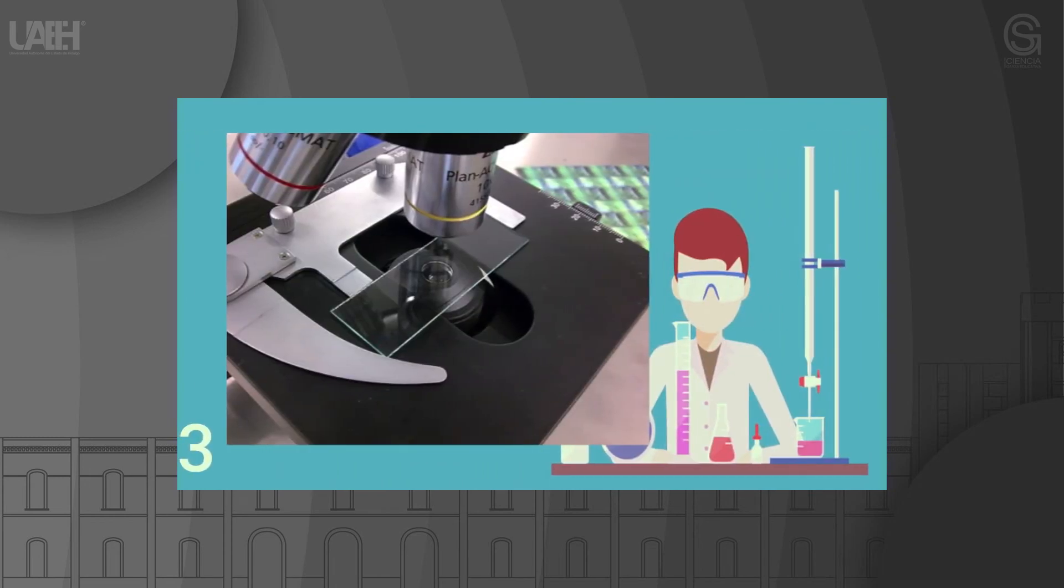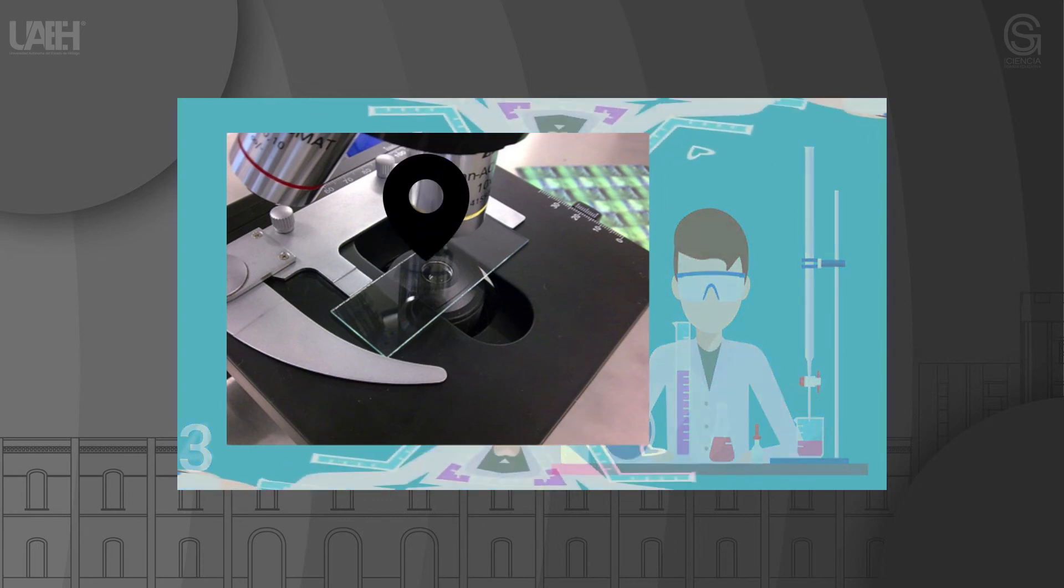Tip 3: Make sure to always cover your samples with a cover slip. This is necessary for good preparation and can also prevent the objective and samples from coming in contact if you mistakenly bring them too close when adjusting the coarse screw.